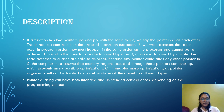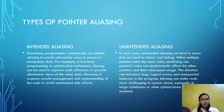The compiler must assume that memory regions accessed through these pointers can overlap, which prevents many possible optimizations. C++ enables more optimizations as pointer arguments will not be treated as possible aliases if they point to different types.